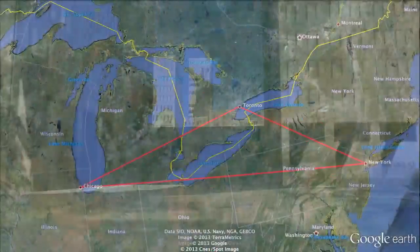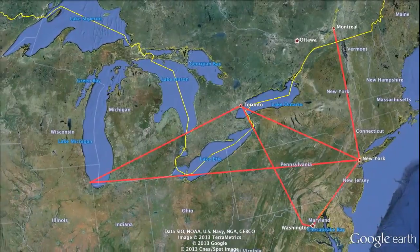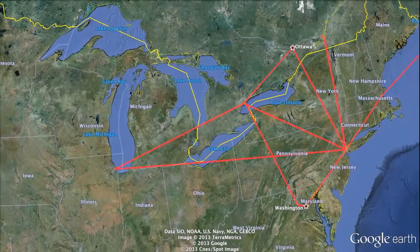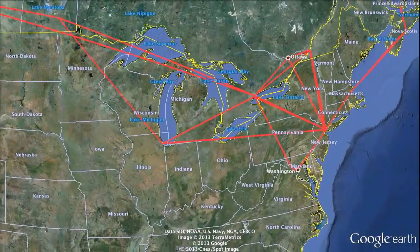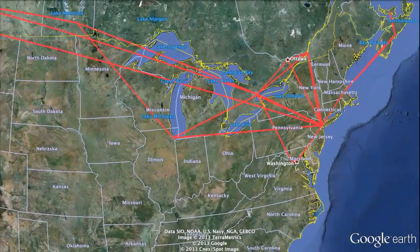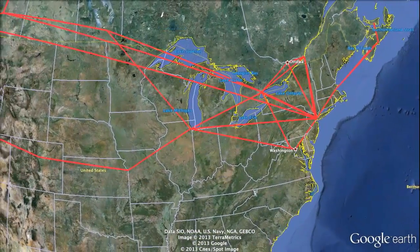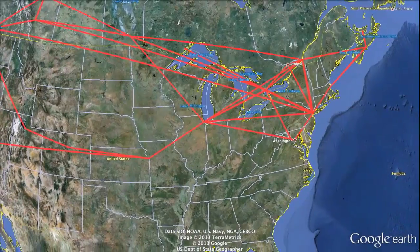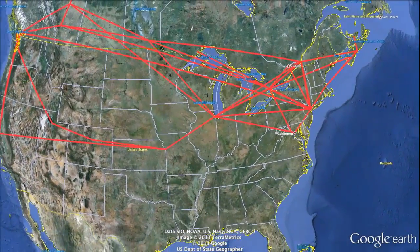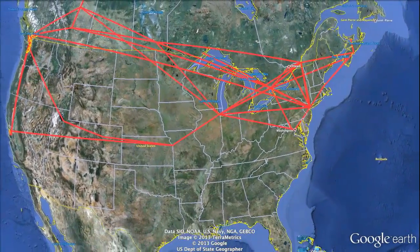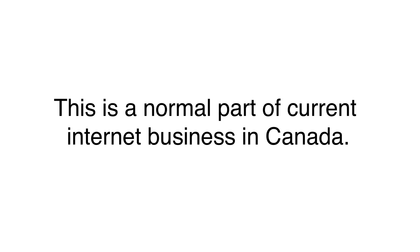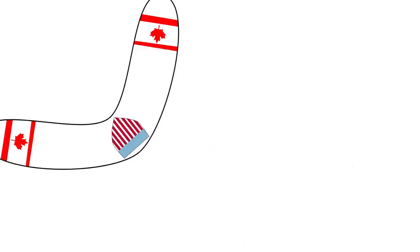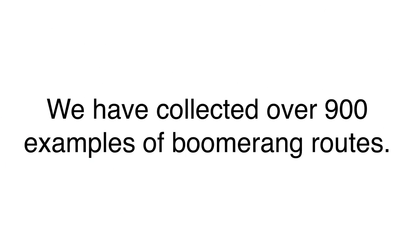It's hard to determine why data is routed in such a roundabout way. Commercial carriers such as TELUS and Cogent unfortunately treat their inter-network data exchanges as confidential business matters, which they don't make public. We do know that this pattern is not an isolated event — it is a normal part of current internet business in Canada. So far, we've collected hundreds of examples of Canadian boomerang routes.